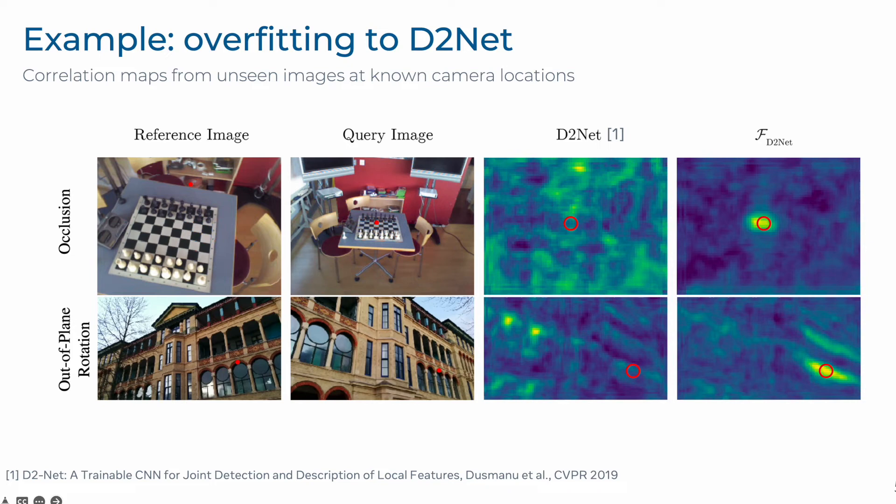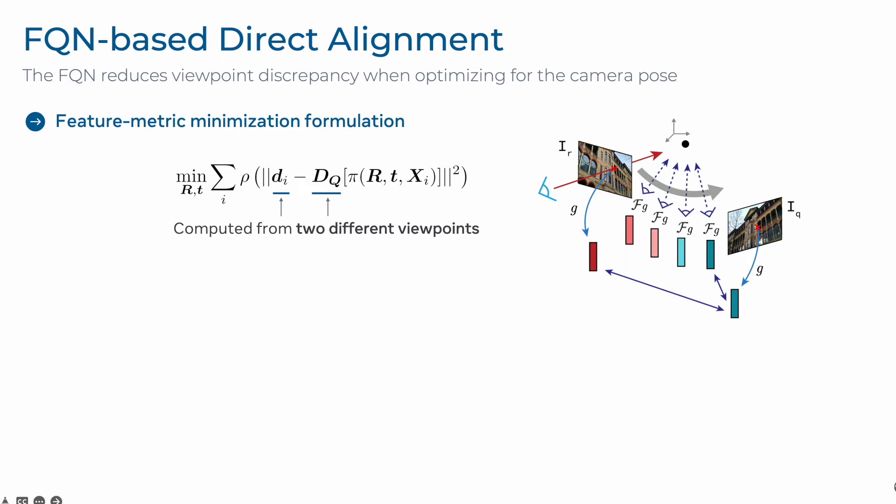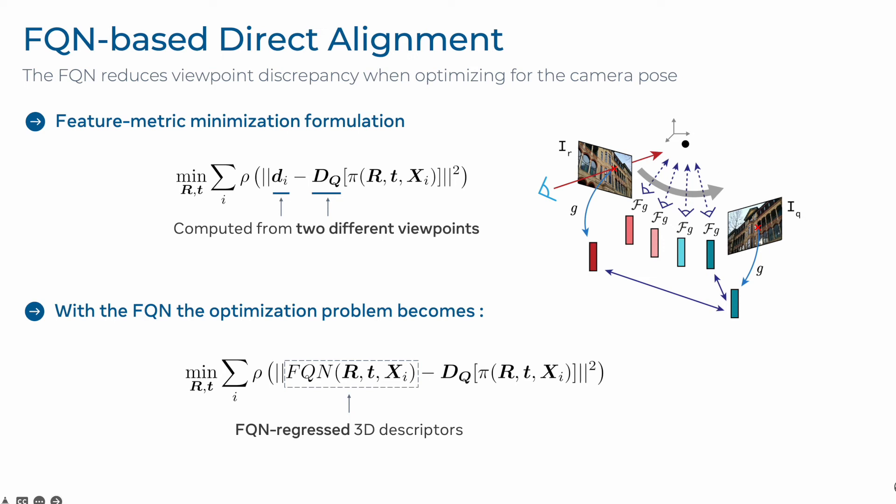FQNs have a direct application to camera pose estimation algorithms. In the case of direct alignment, the goal is to minimize a feature-metric reprojection error between fixed descriptors from pose-reference images and query dense feature representations. In the case of strong viewpoint discrepancies or occlusion, this optimization can easily get stuck in local minima. Using an FQN, we can reformulate this objective to dynamically query and regress 3D descriptors based on the current estimate of the camera pose. Our experiments show that this can help improve the convergence of direct alignment methods, especially in the case of wide initial camera baselines.